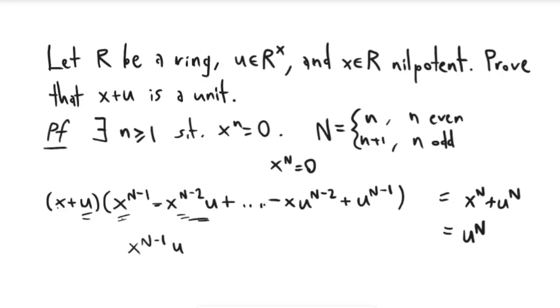But now we know that u is a unit. And so in particular, u has an inverse. And so there's an element so that if I take u to the n and I multiply it by u inverse to the n, that this is just equal to 1.